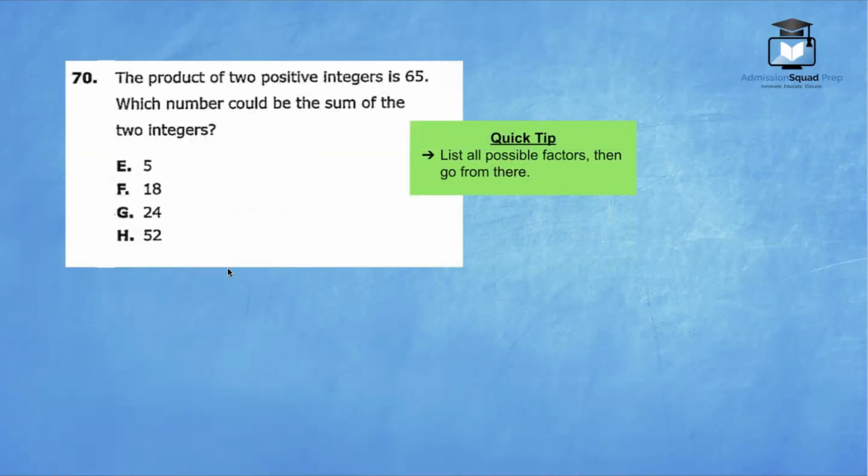Question 70, the product of two positive integers is 65. Which number could be the sum of the two integers? We're going to check out all the possible factors of 65. We can have 1 times 65. We can have 5 times 13. And that's just about it. So 65 has four possible factors.